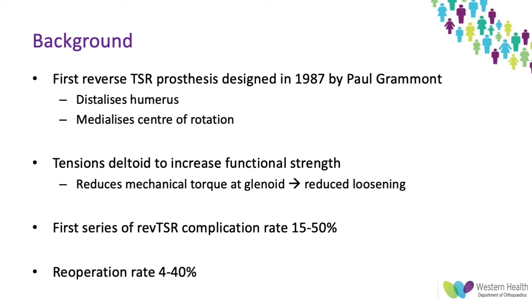By doing this, it reduces the mechanical torque of the glenoid and is thought to also reduce the loosening of the glenoid component. Unfortunately for the first series of reverse total shoulders, the complication rates were quite high — up to 50% — and the re-operation rates were even up to 40% as well.